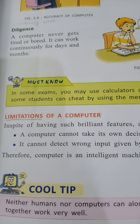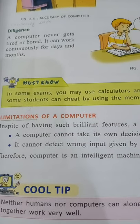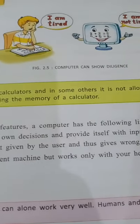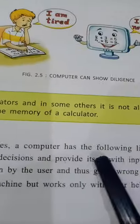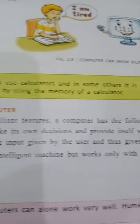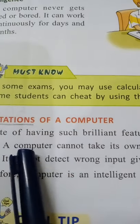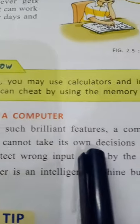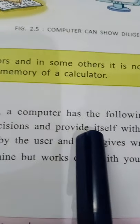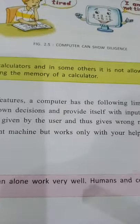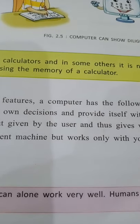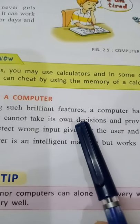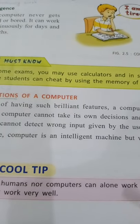In spite of having such brilliant features, a computer has the following limitations. The first limitation is: a computer cannot take its own decisions and cannot provide itself with input. When we do not give the computer any input, it will not do any processing. The computer cannot make any decision until we give it input.